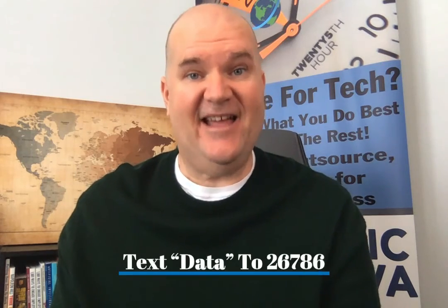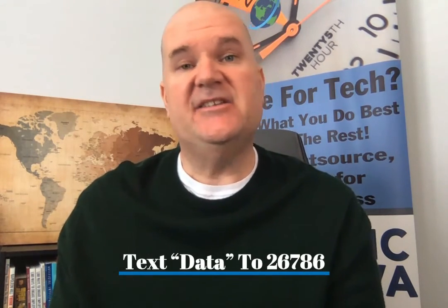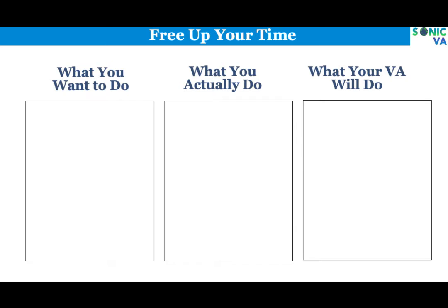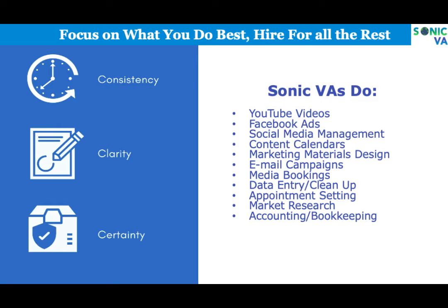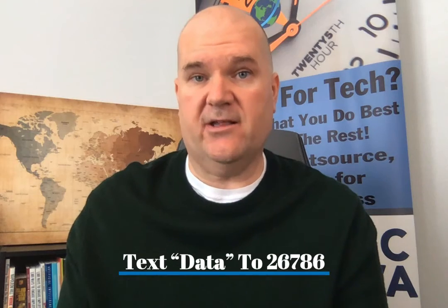I hope you found this useful. To learn more and get started, you can text the word DATA — D-A-T-A — to 26786. You'll get a reply with a form to fill out about what you need a VA to help you with: research for new stages, email campaigns, social media connections, sharing information across conferences and summits both in-person and online. Text DATA to 26786 and we'll hook you up with a VA.